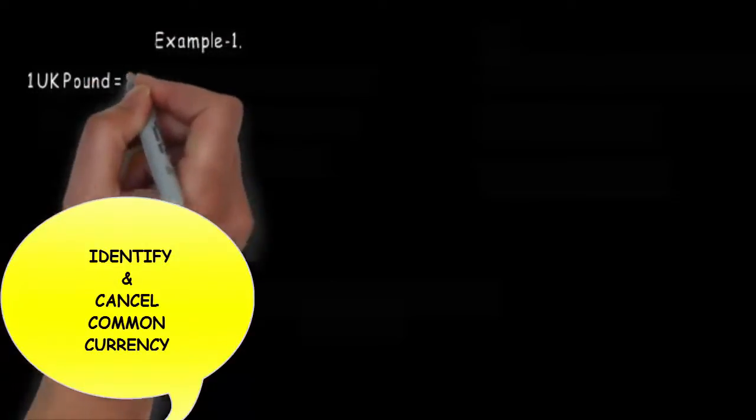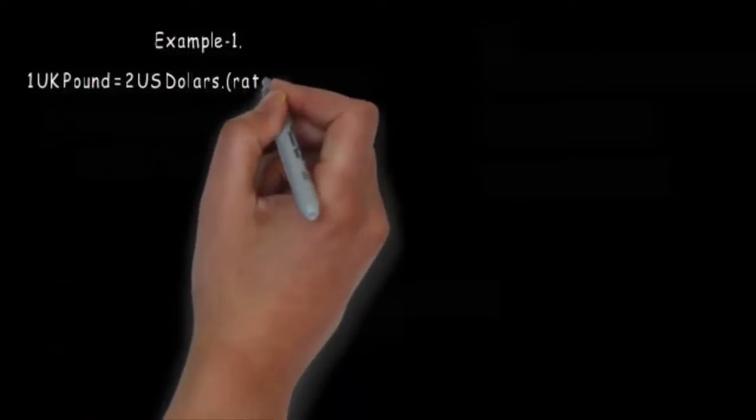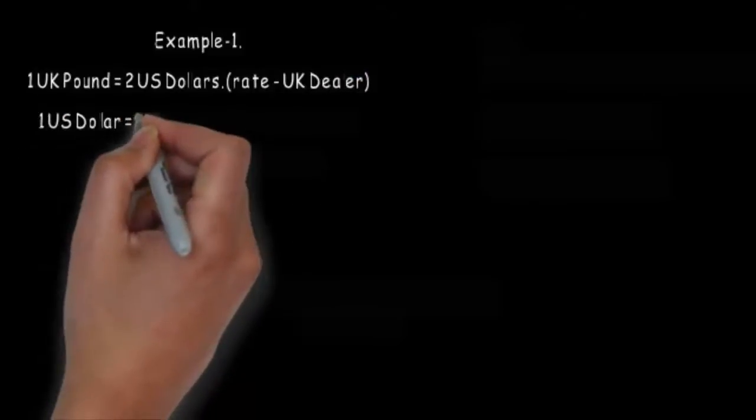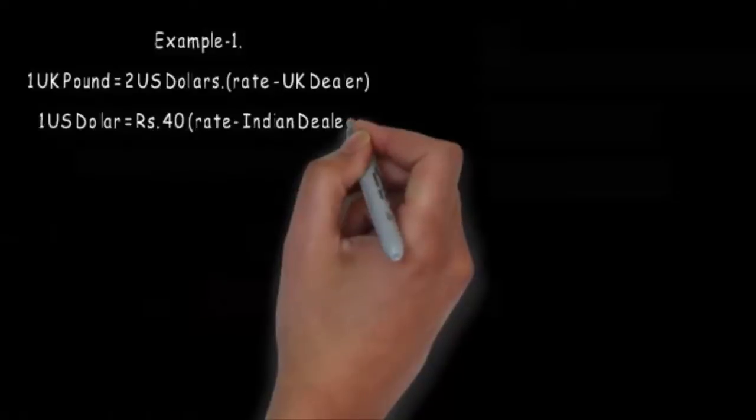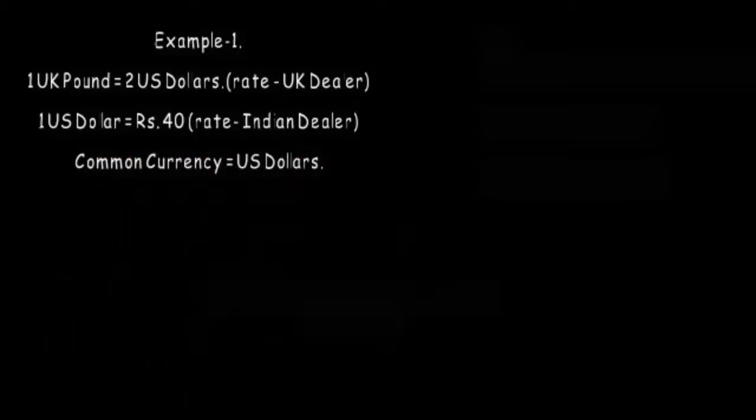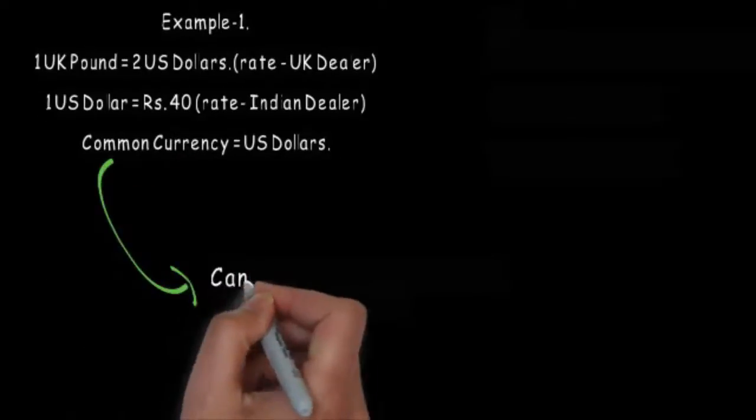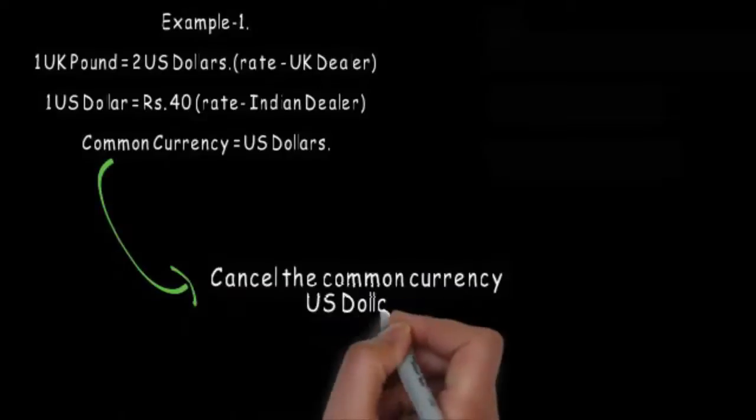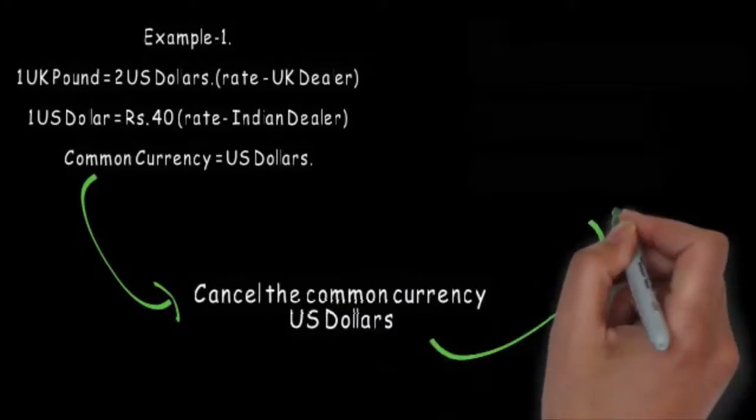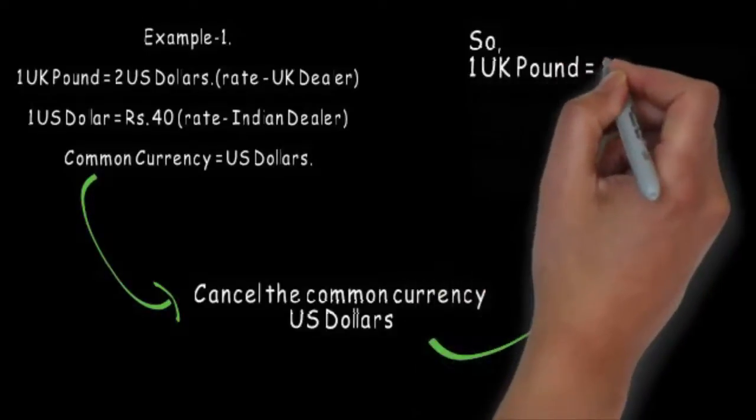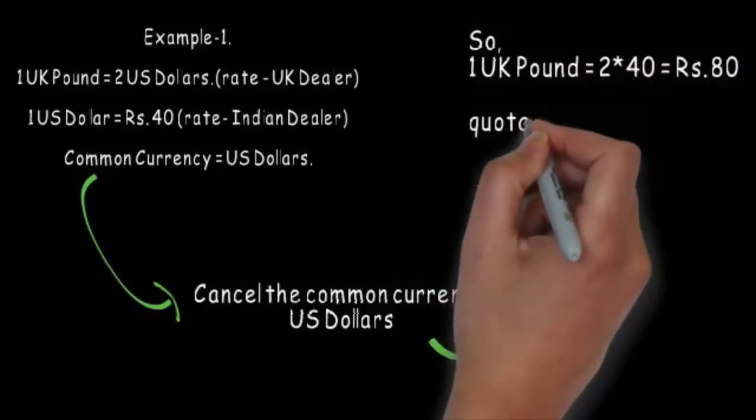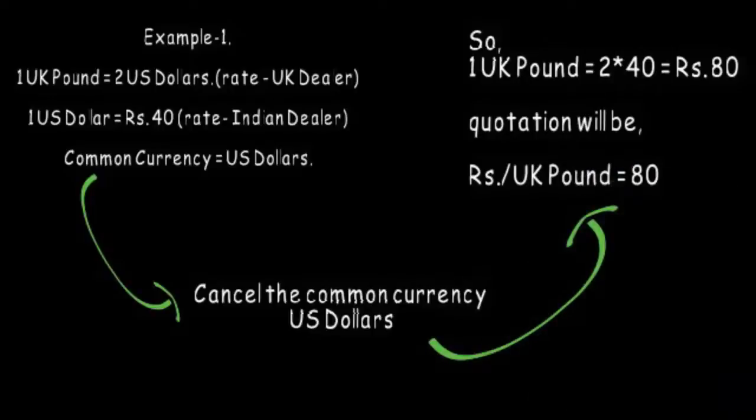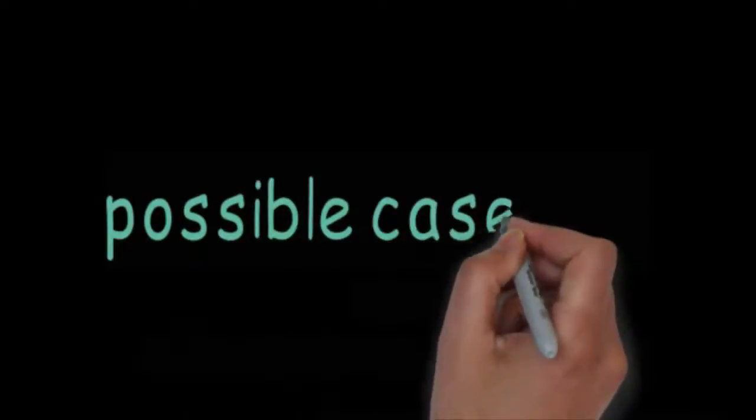So let's take an example. The rate that is quoted in UK is 1 UK Pound equals 2 US dollars, and in India it is 1 US dollar equals Rupees 40. Now the common currency is dollar. So for getting the cross rate, I need to cancel this common currency, that is US dollar. So 1 UK Pound equals 2 US dollars, and 1 US dollar equals Rupees 40. That gives me a rate in terms of Rupee per UK Pound.